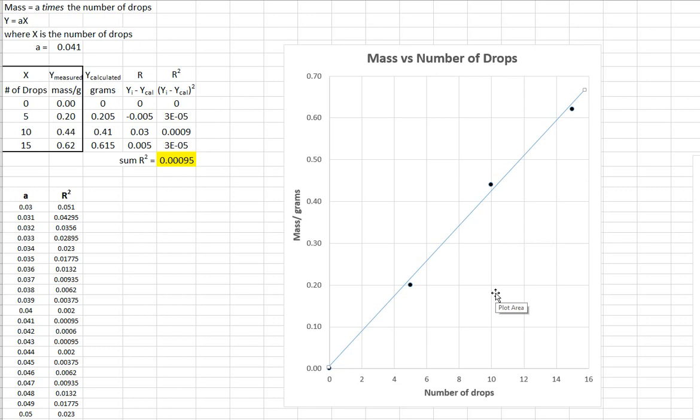And then you take the slope and that would be a method of getting the relationship, a linear relationship going through the origin. And the relationship is y, which is the mass, equals a times x is the number of drops. So a would be the mass per drop. And here I've guessed the value of a, but I'll talk about that in a second.